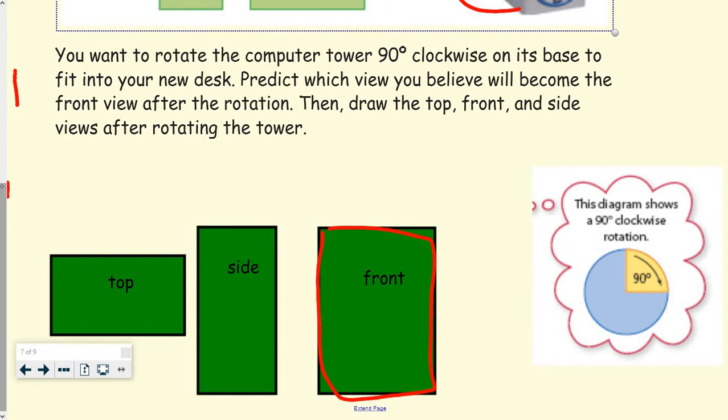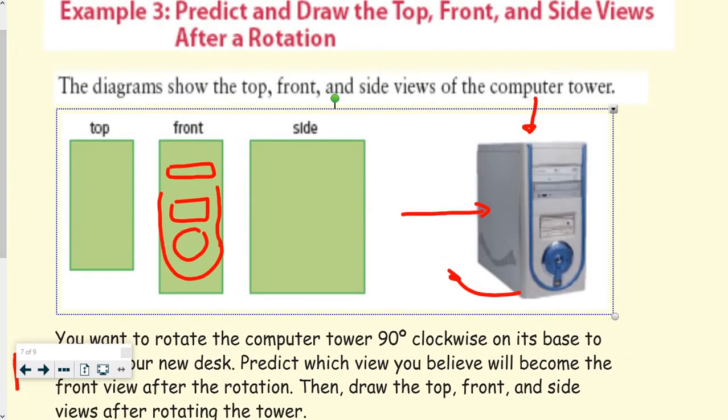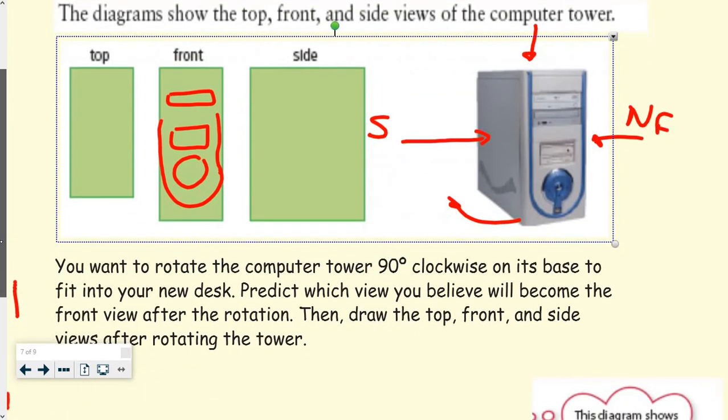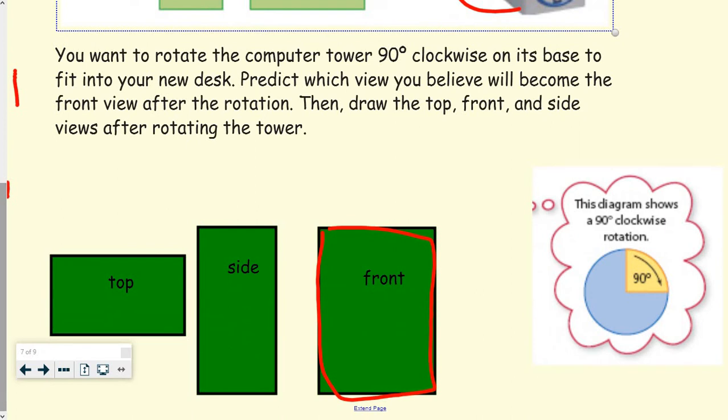So as we scroll up, this front or this side now becomes this front. This is now the front. New front. So that's how, when we rotate it, you have to actually think about it in your head and spinning onto which side it is.